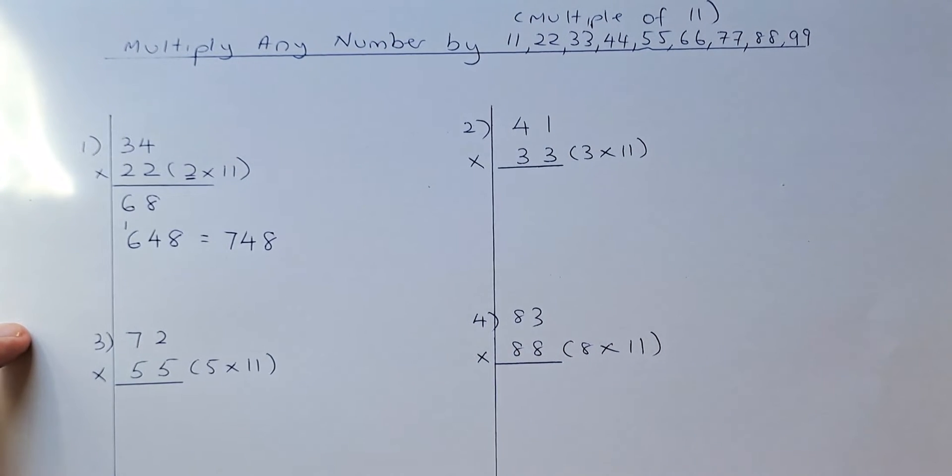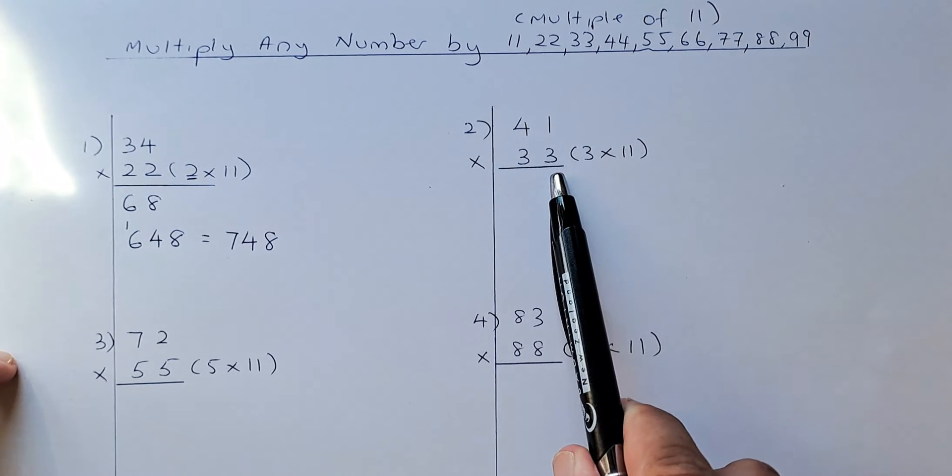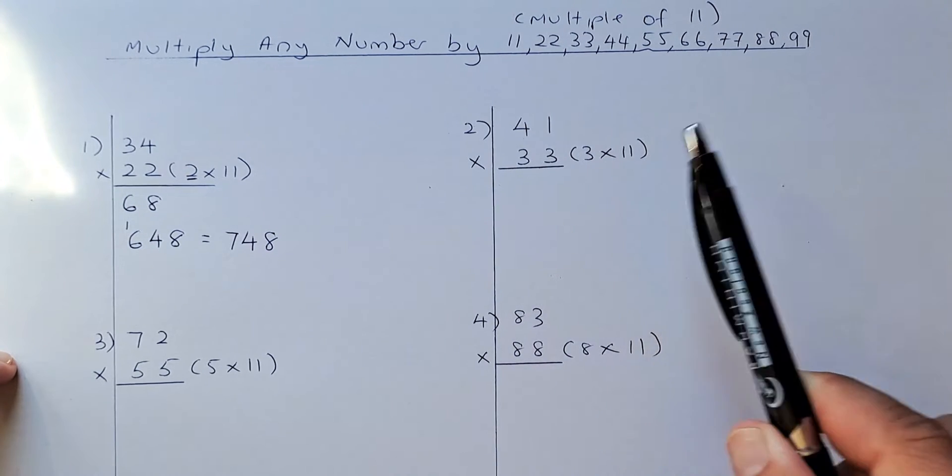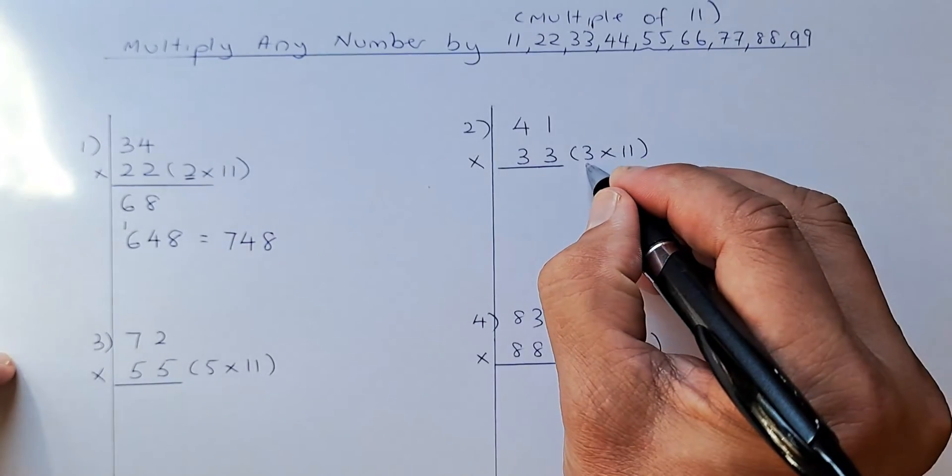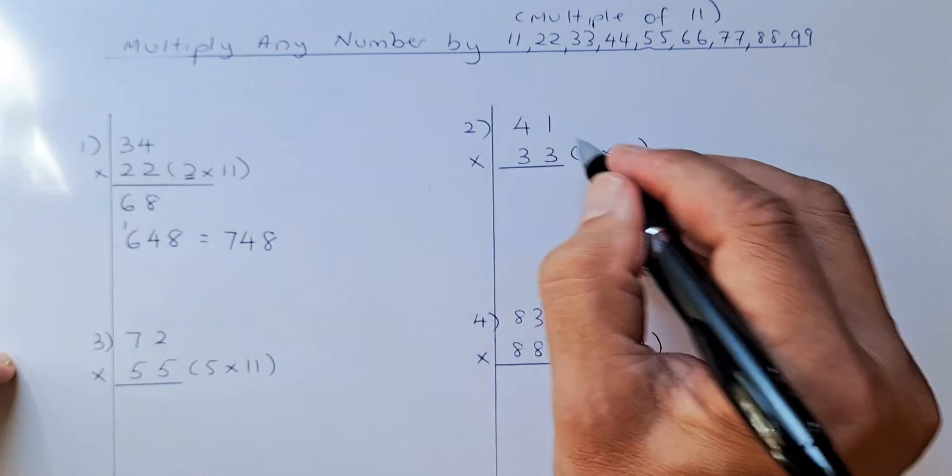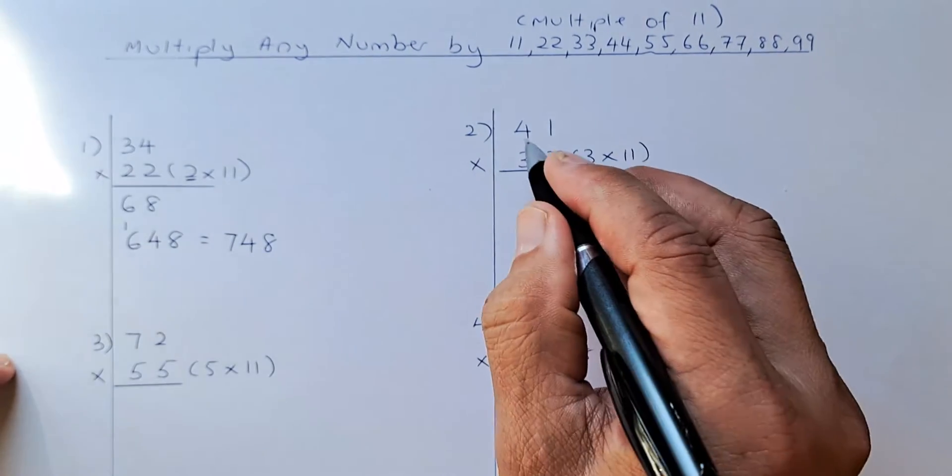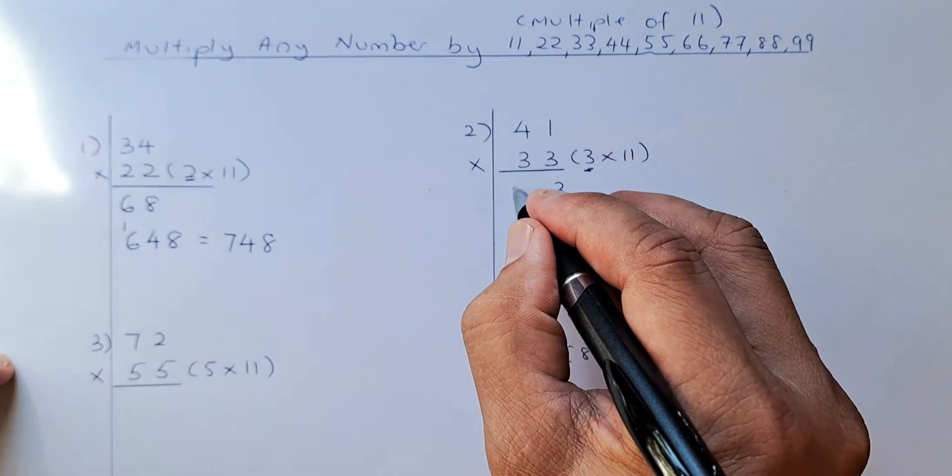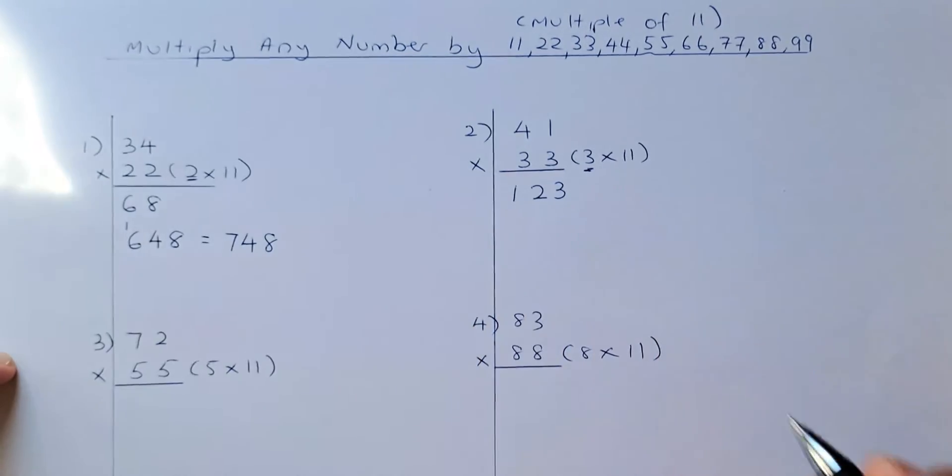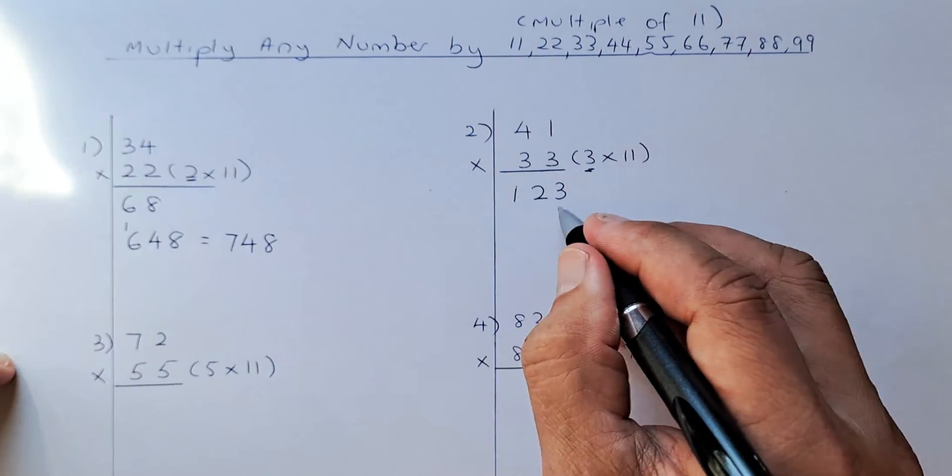So we shall continue with a little bit harder. Now we're going to multiply by 33. 33 is made up of 3 times 11. So of course, we're going to start with 3 first. So 41 times 3. So 1 times 3 is going to be 3. And then 4 times 3 is going to be 12. So you divide it as 1, 2.